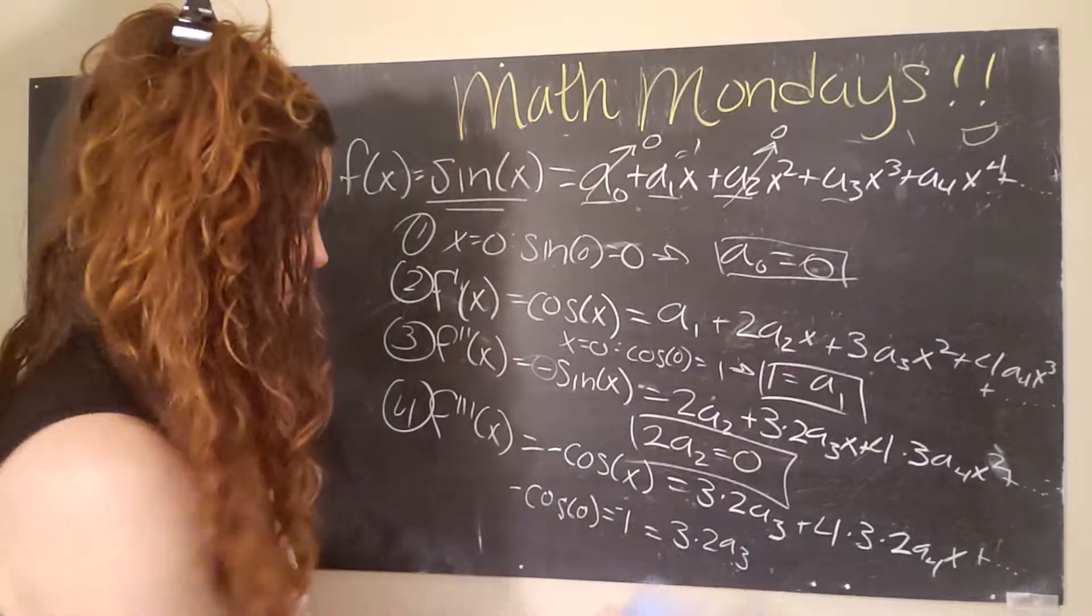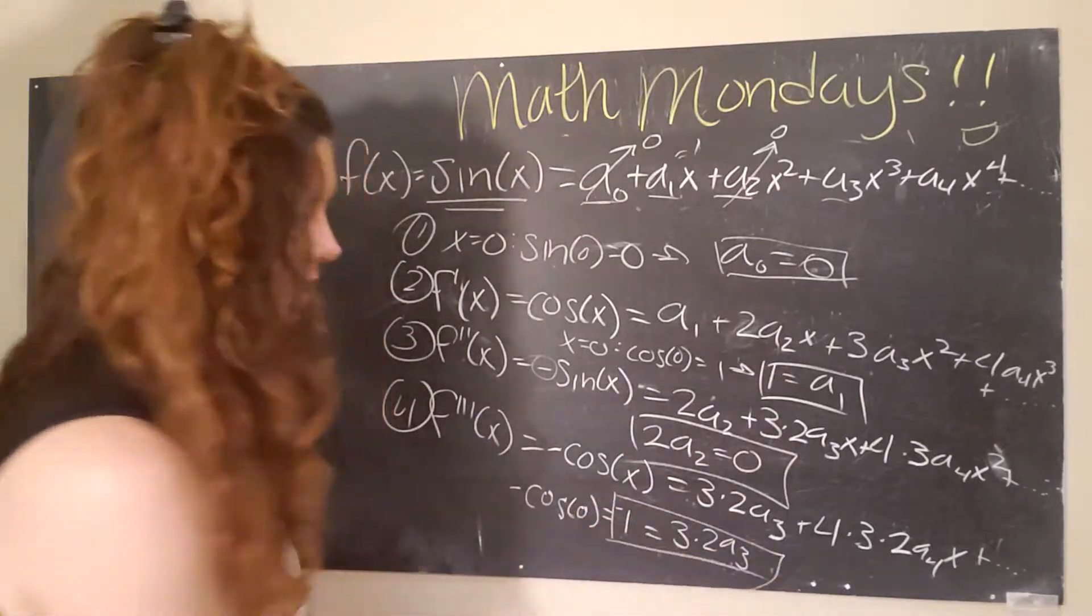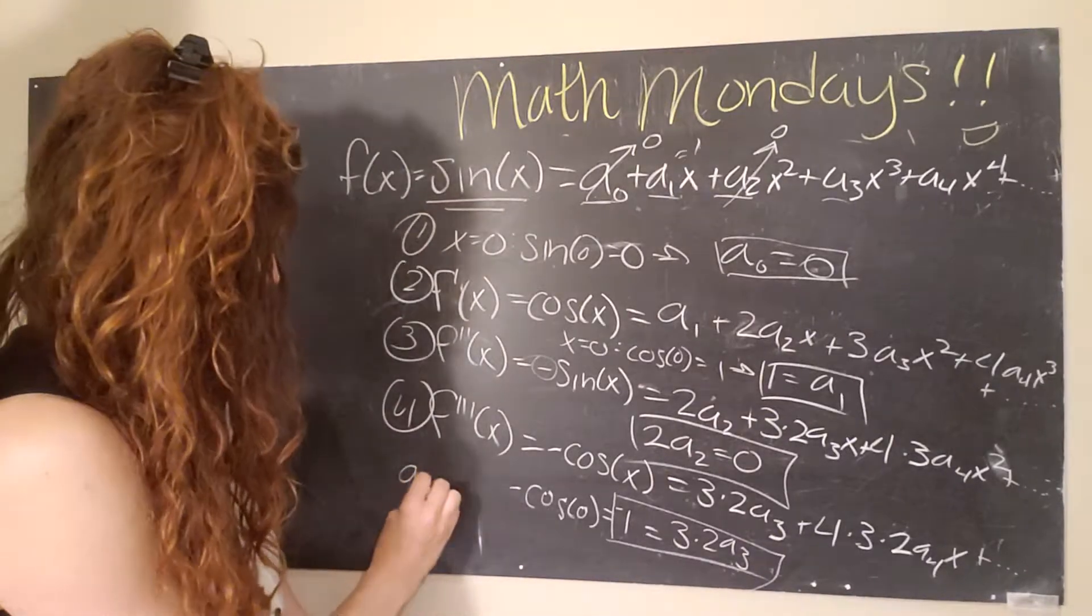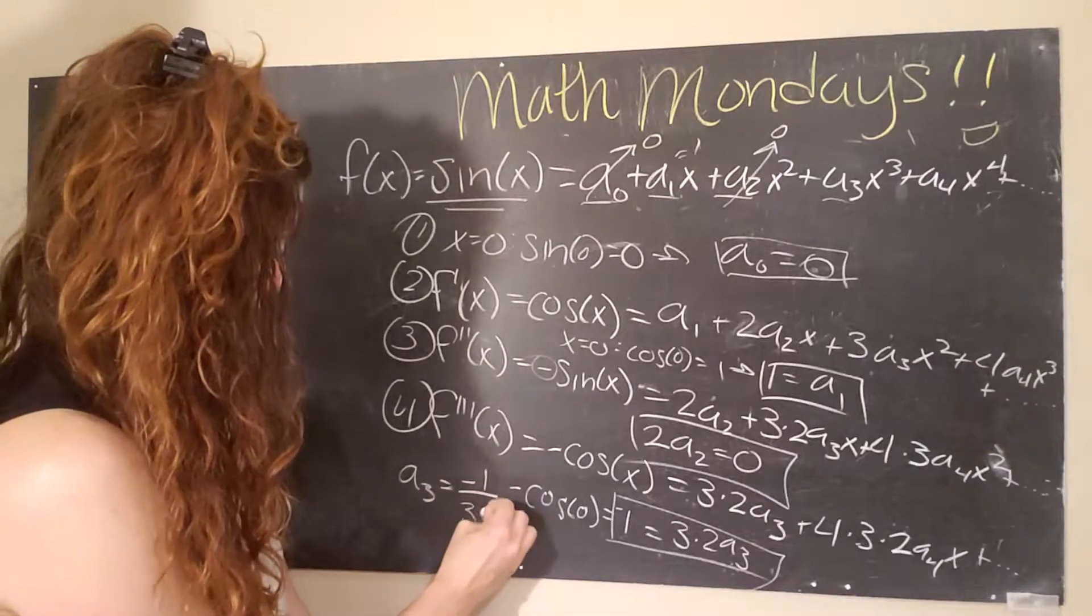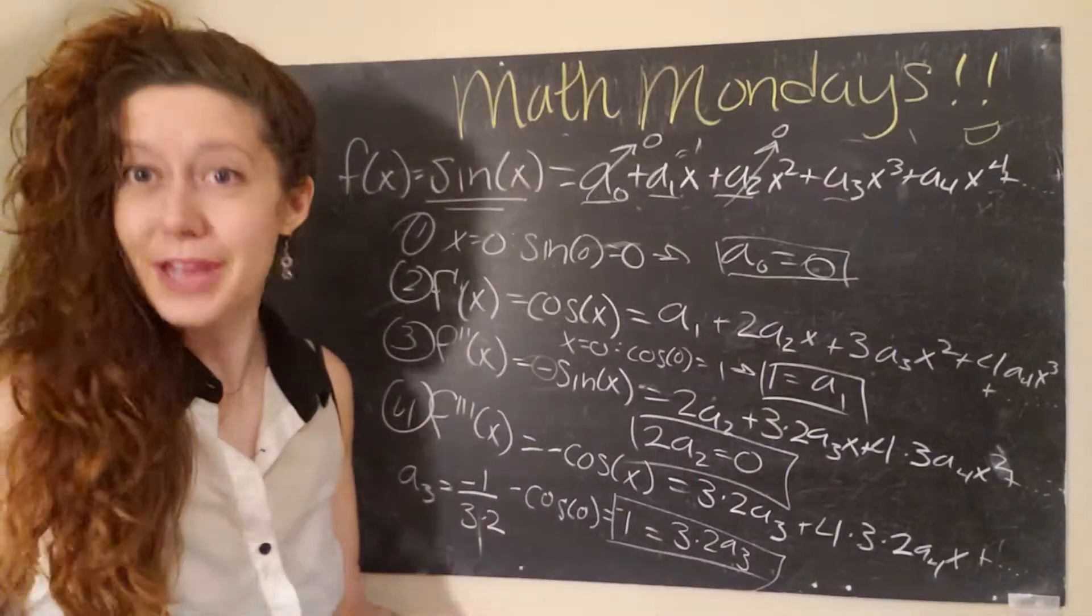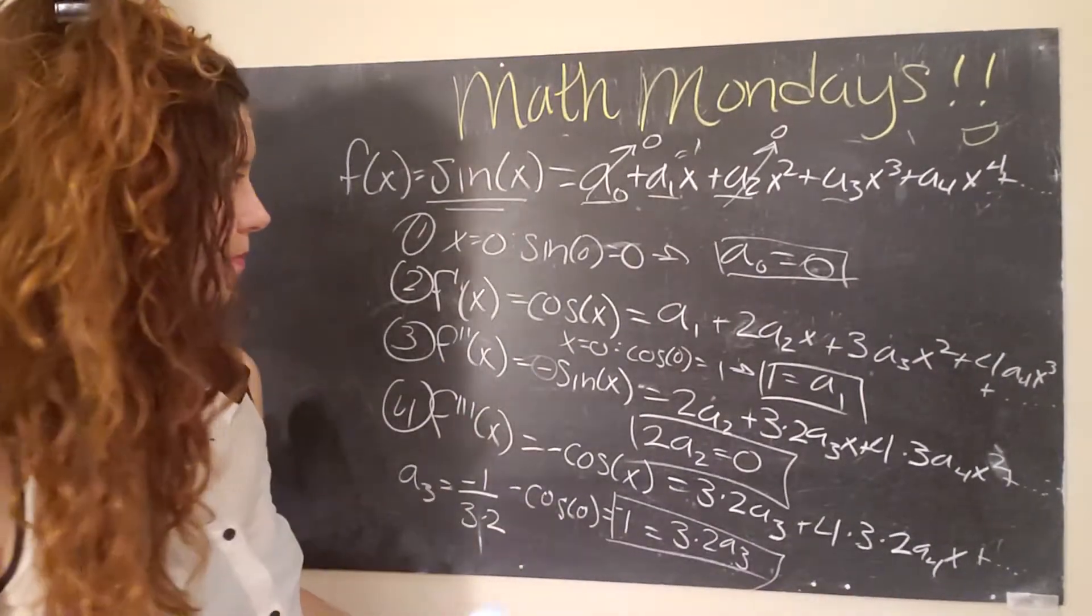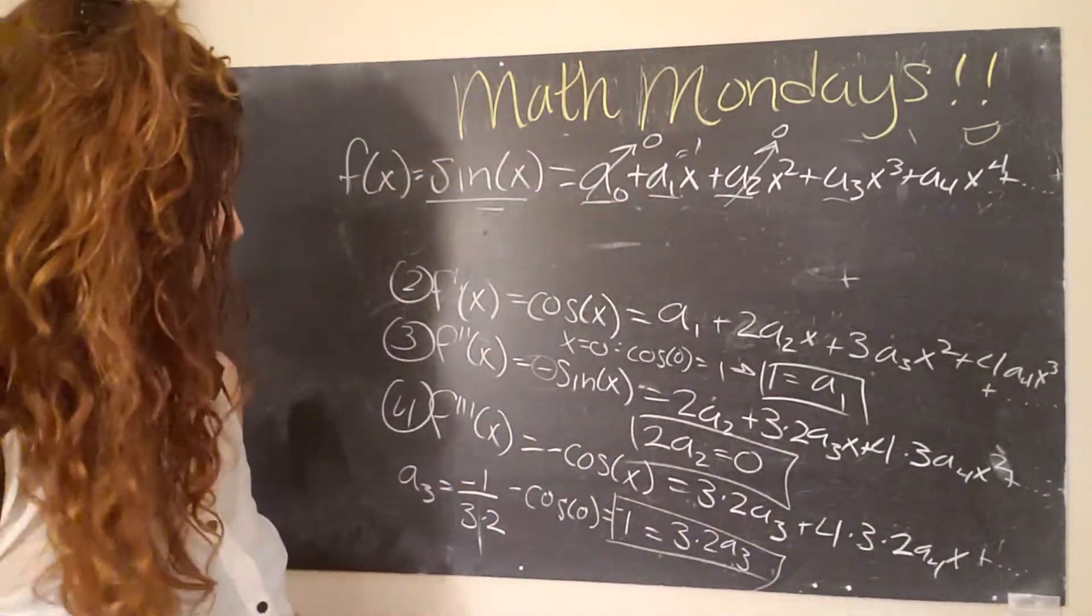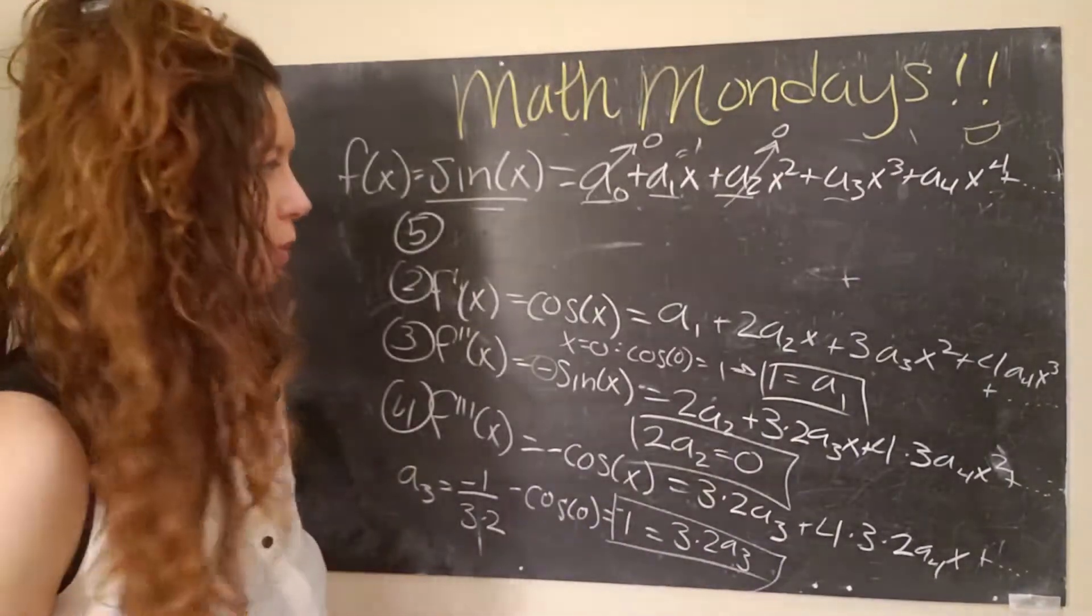Cosine of zero equals one, but we have a negative on both sides because this negative here. And so now we get that goes away. So three times two a three, and I'm kind of out of space. But basically you're going to get this and what you'll find is a three equals negative one divided by three times two. And you're like, well, why don't you just multiply these together? Isn't that just six? Yeah, exactly. But if we do this one more time, hopefully the pattern will become clear.